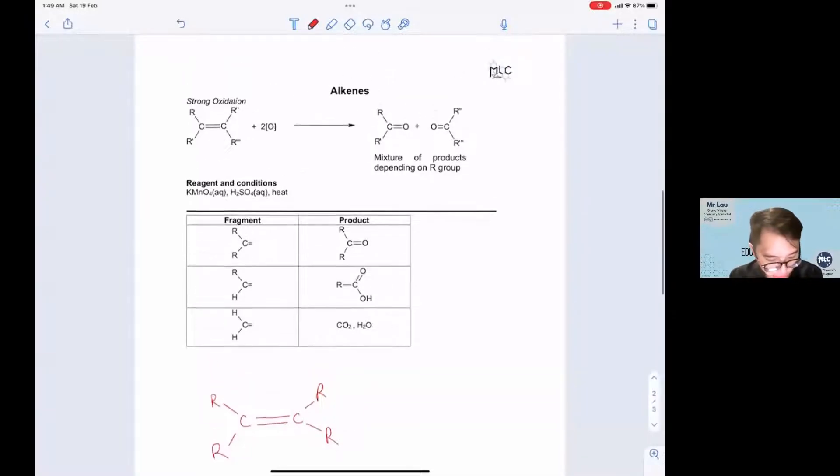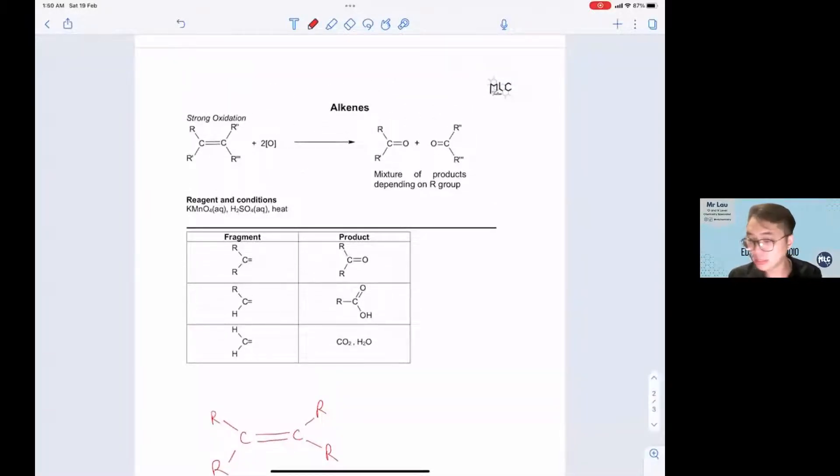Okay, today let's look at strong oxidation of alkenes or oxidative cleavage of alkenes. Alkenes can undergo oxidative cleavage with these reagents and conditions: KMnO4, H2SO4, and heat. So what happens is you will break the C=C double bond.